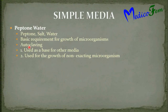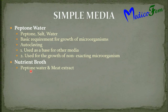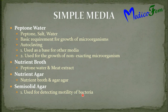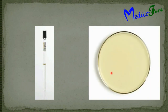Simple media: peptone water is a simple medium. It has peptone, salt, and water. It is the basic requirement for growth of organisms. It is sterilized by autoclaving. It is used as the base for preparation of other media and also for growth of non-fastidious organisms. Nutrient broth contains peptone water and meat extract. Nutrient agar contains nutrient broth with agar agar. Semi-solid agar is used for detecting motility of bacteria; it has an agar concentration of 0.5% or less.